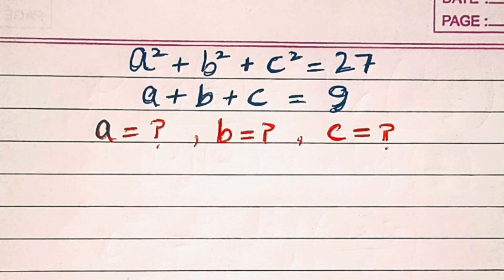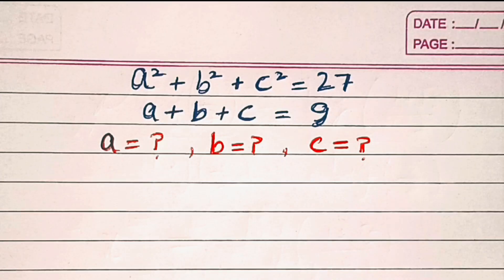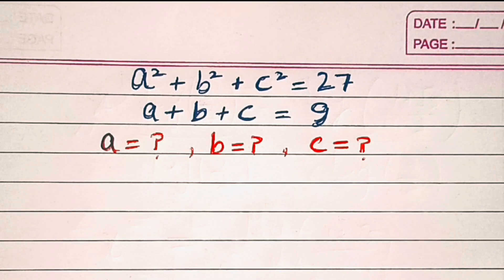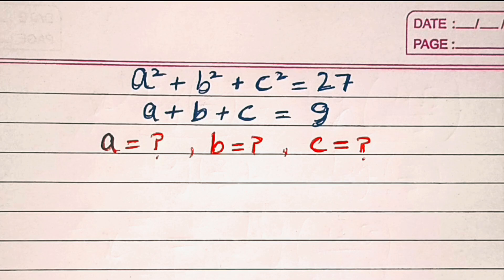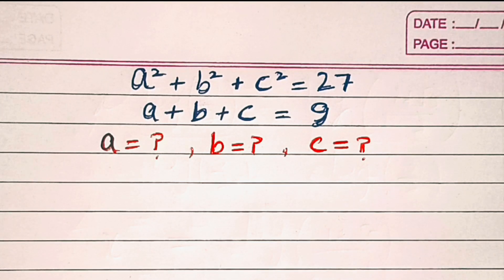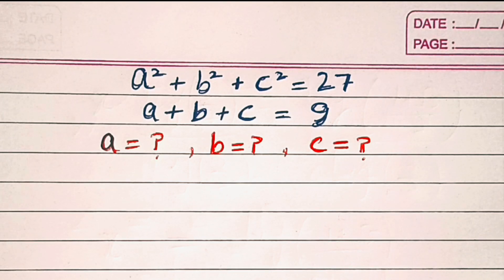Hi everyone, welcome to Think and Derive. In this video tutorial, we have a² + b² + c² = 27 and a + b + c = 9. So we need to find the value of a, b, and c. Let's try this out.